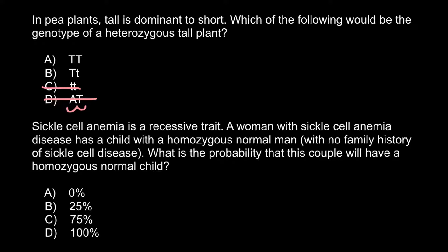We can cross out answer C. Now we're left with answers A and B. We can cross out answer A because that plant would be tall but homozygous — both alleles would be dominant. Our question asks about a heterozygous tall plant, so our answer is B. This plant is phenotypically tall and genotypically heterozygous, with one dominant and one recessive allele.